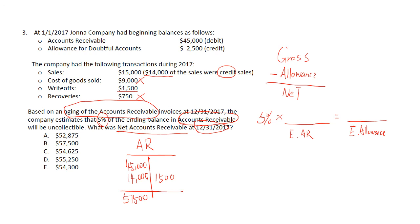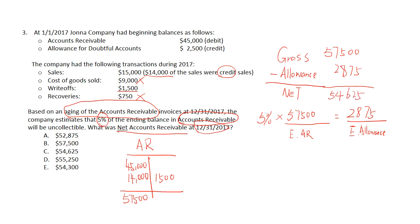To calculate the ending allowance, we apply 5% to the ending accounts receivable balance and get $28,750. The ending net value of accounts receivable is then $575,000 minus $28,750, giving us approximately $54,625. The answer is C.